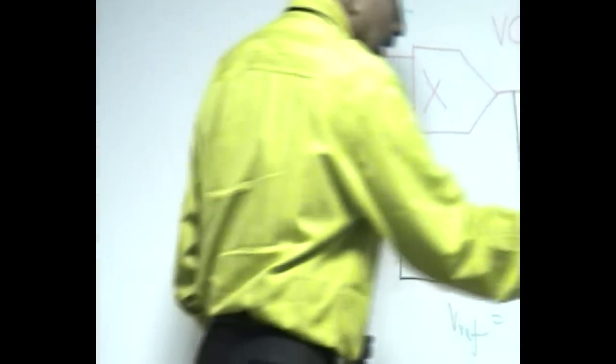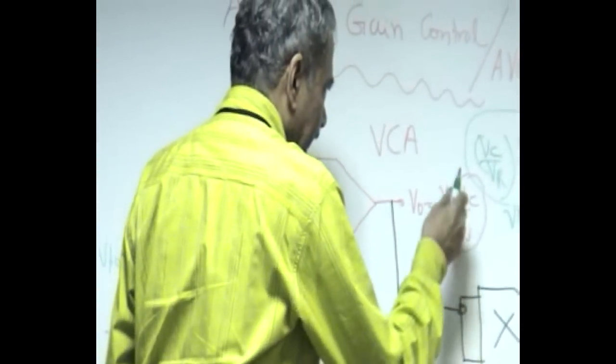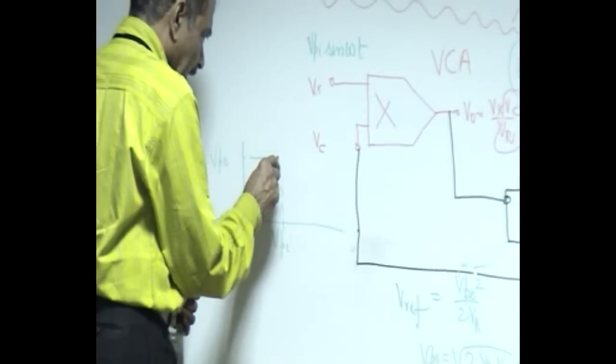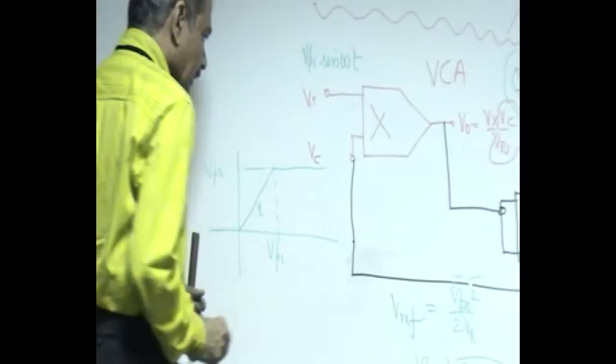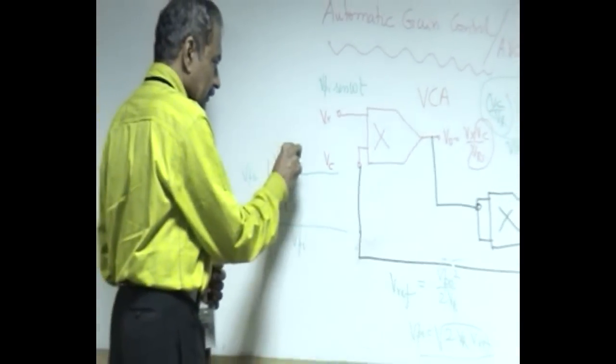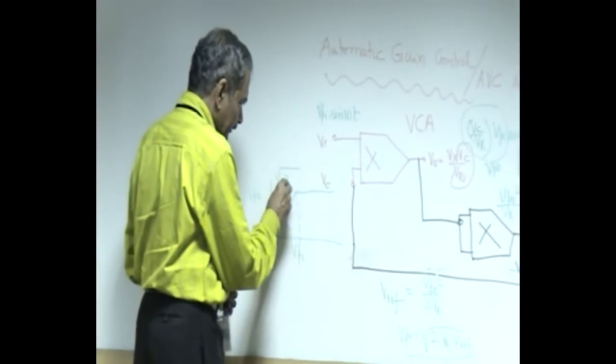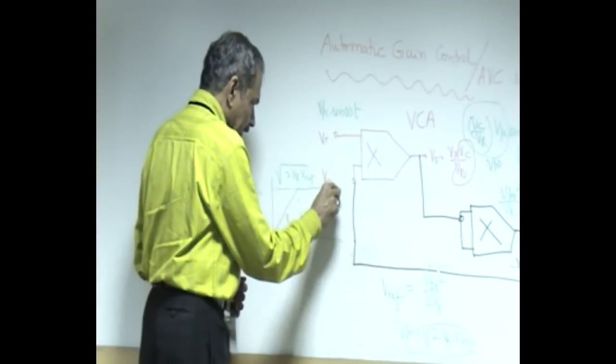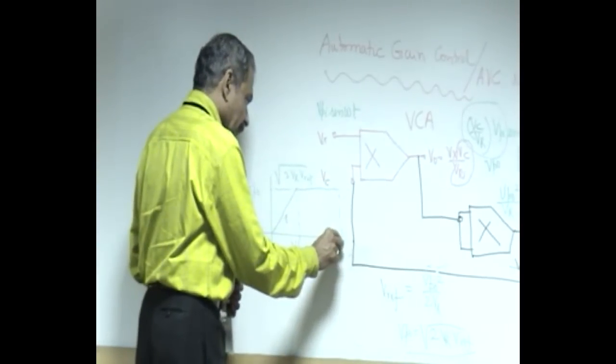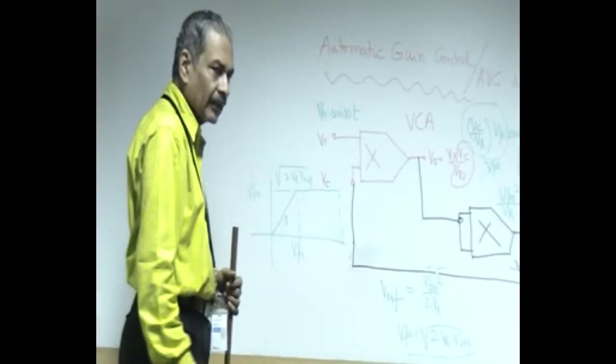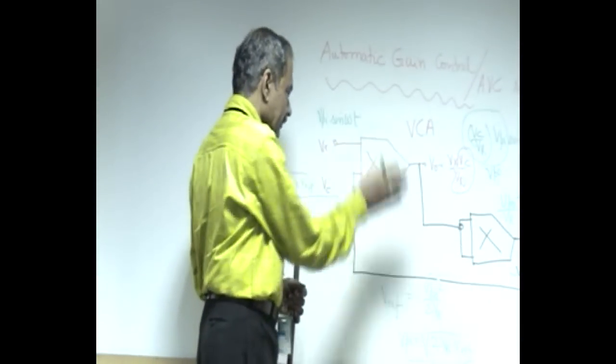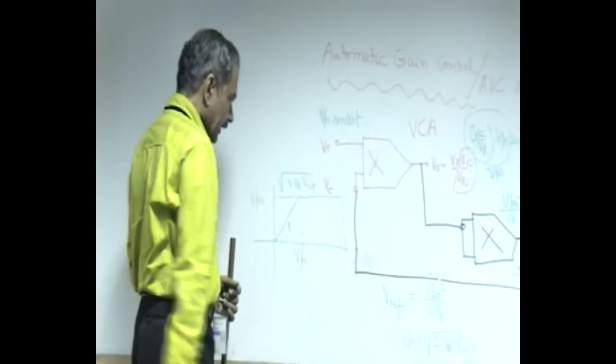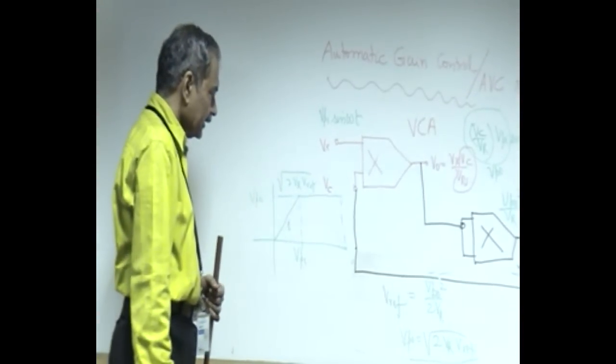Let's say 10 volts is the saturation voltage, and this is 10 volts, which is unity gain. Thereafter, it remains constant at this magnitude until the input amplitude itself exceeds this voltage.